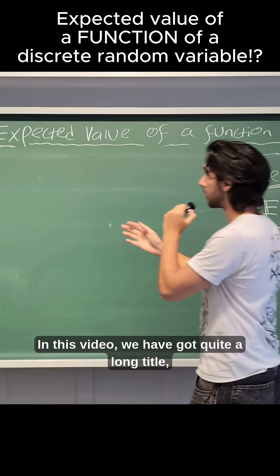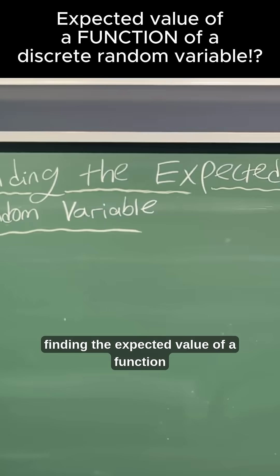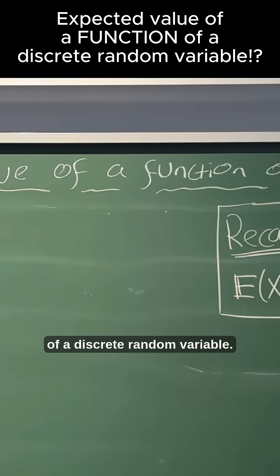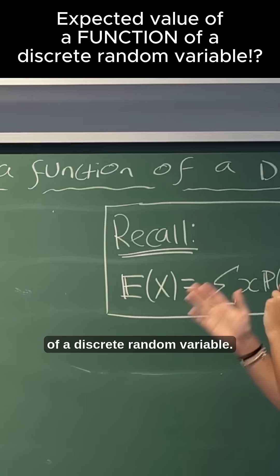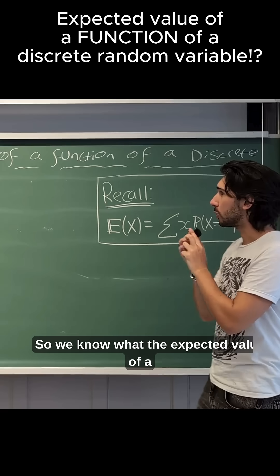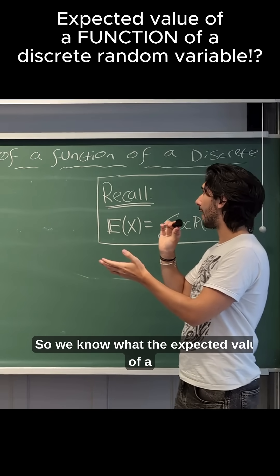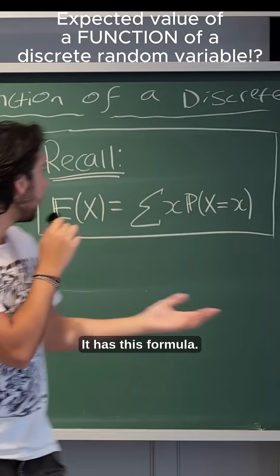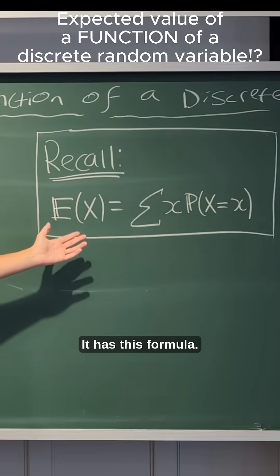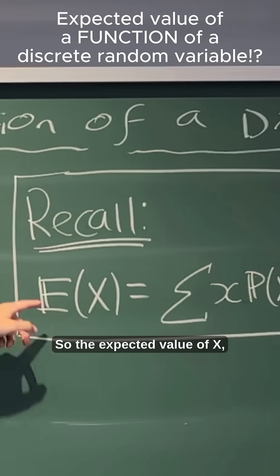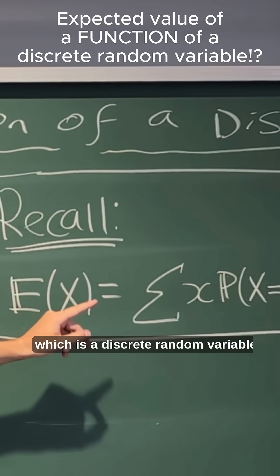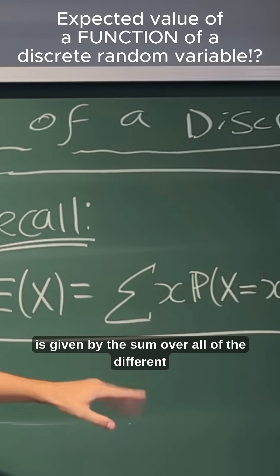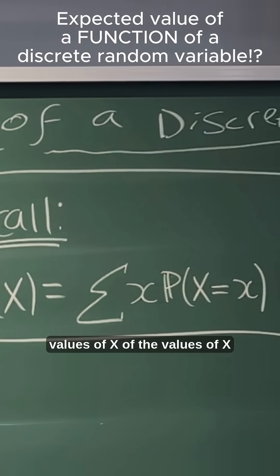In this video we have got quite a long title: finding the expected value of a function of a discrete random variable. So we know what the expected value of a discrete random variable is — it has this formula. The expected value of X, which is a discrete random variable, is given by the sum over all of the different values of X.